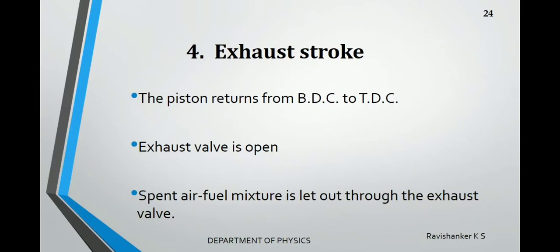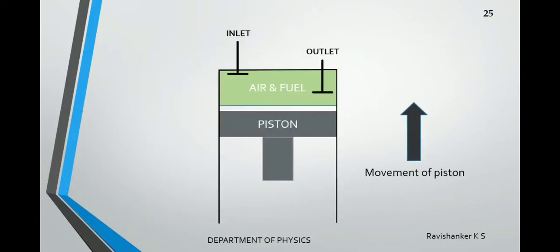The last stroke is the exhaust stroke. In this stroke the piston returns from BDC to TDC and the exhaust valve is opened. The inlet valve is closed and the outlet valve is open, so the piston moving upward allows the residue of the air-fuel mixture to move out of the engine cylinder through the outlet. All these strokes are continuous — there is no break in between each stroke.